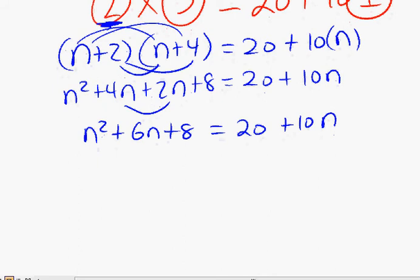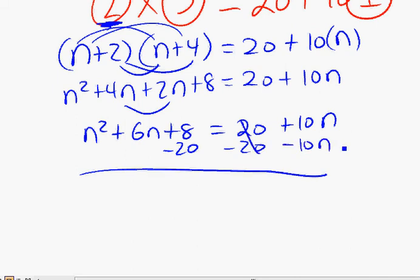All right, now let's put everything on one side, so let me subtract 20 on both sides, and also subtract 10n on both sides. This way I have n squared, and 6 minus 10 is negative 4n, and minus 12 is equivalent to 0.